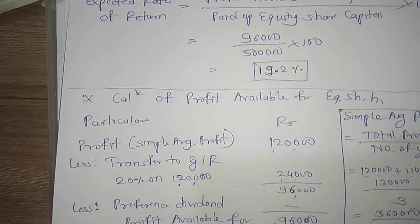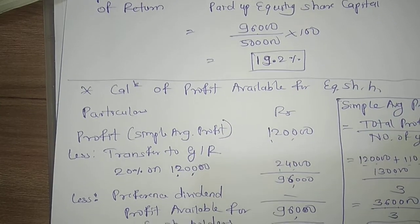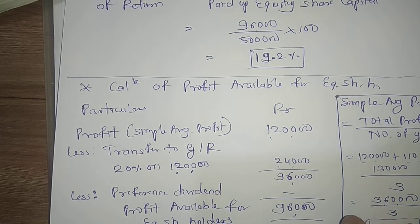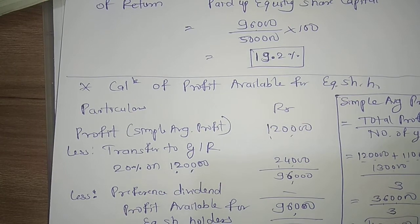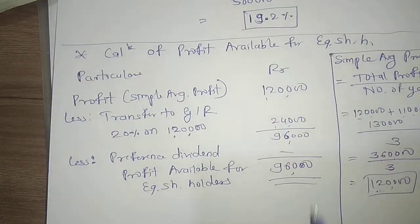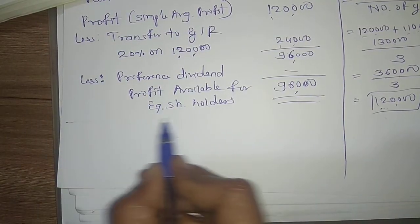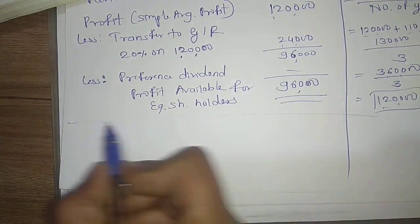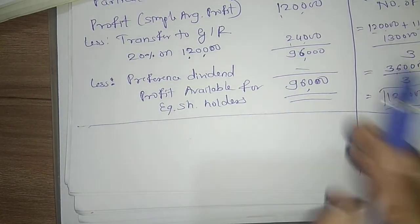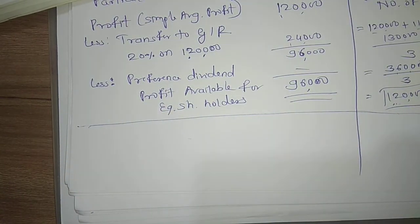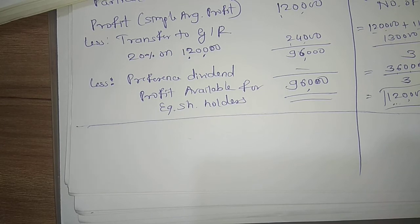The third method is the fair value method. The formula is: (net asset value + yield value) divided by 2. As homework, calculate the fair value method using the answers from the two methods above. If you have any doubts, put them in the comment box. Thank you.